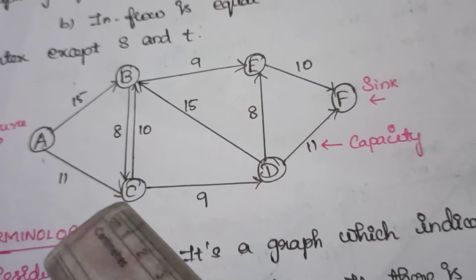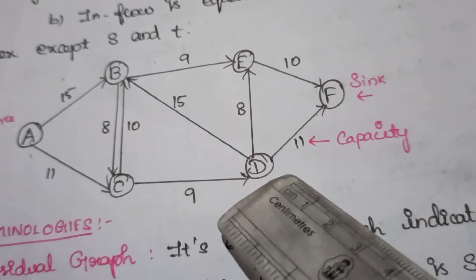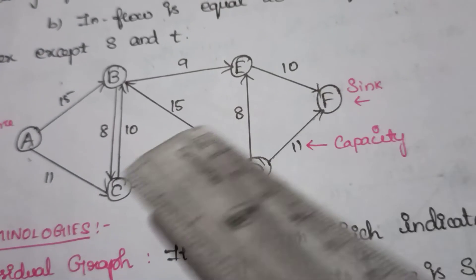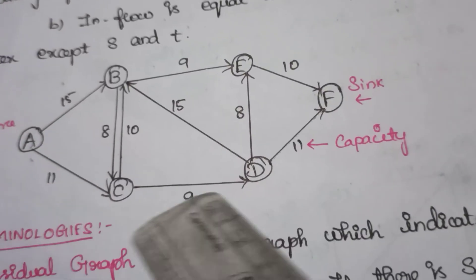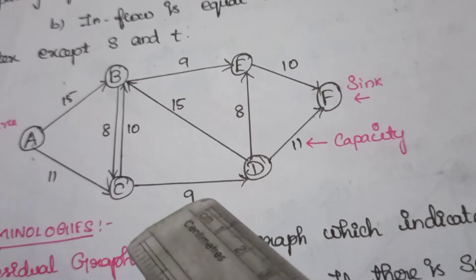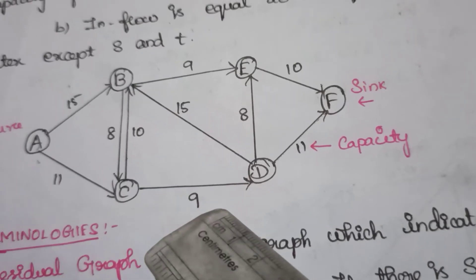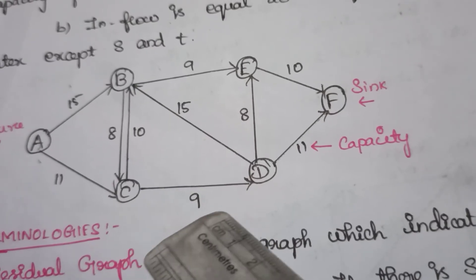Consider the path A to C, C to D and D to F. Here in this augmented path you should find the minimum capacity. Here obviously the minimum capacity is 9.